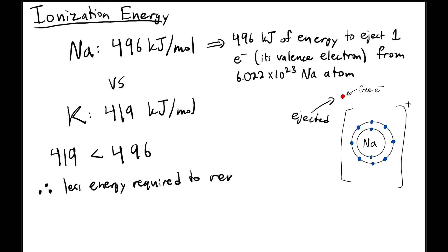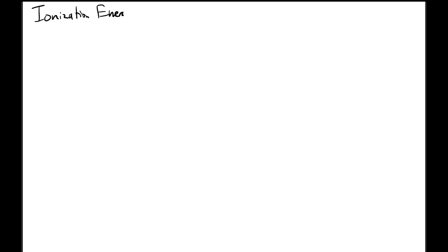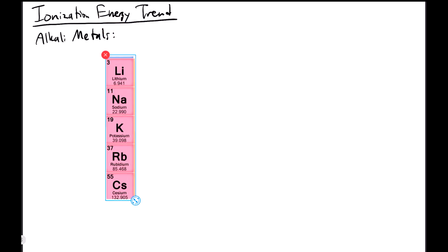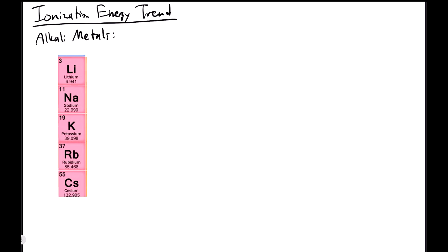So the data shows us that it takes less energy to remove one electron from potassium than from sodium, which actually lines up pretty well with our explanation that potassium's electron is at a higher energy level than sodium. Interestingly, this trend extends over all of the alkali metals. The alkali metals are the elements in the first column of the periodic table, excluding hydrogen.